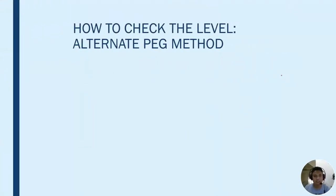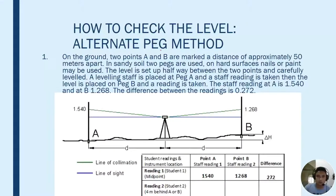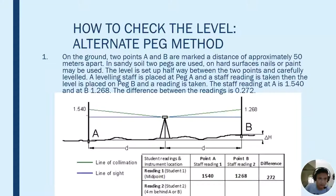To check the level using the Two-Peg test, we have two methods. The first is the alternate peg method, where we put the instrument in between the two stations or two points called pegs. If we have two stations A and B approximately 50 meters apart, we put the instrument at midpoint and assume the error in the line of sight of the instrument is upward. Since the instrument is at midpoint between the stations, the error on the rod reading will just be equal.